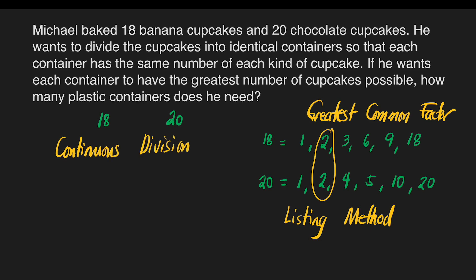How do we do continuous division? To find the GCF of a set of numbers, the first thing we should do is write the numbers horizontally and find a prime number that will divide all the numbers if possible. So we'll write them horizontally: 18 and 20. Then we will divide these two numbers by a prime number. Let's find what prime number can divide 18 and 20. Let's have 2 — 2 is a prime number, actually the smallest even prime number. 18 divided by 2 is equal to 9, so we'll write 9 at the bottom.